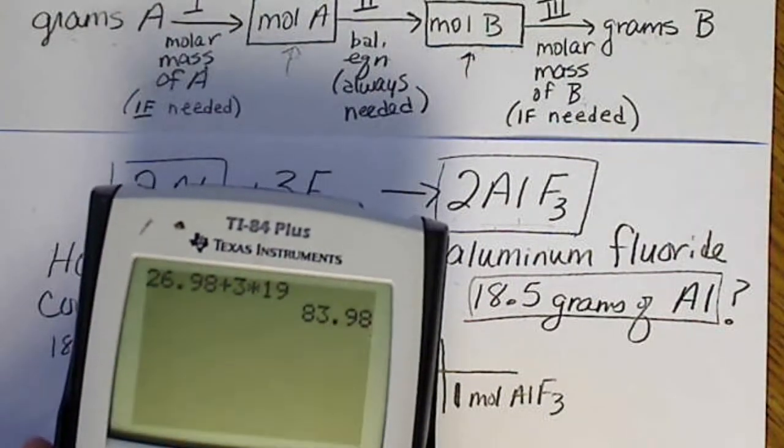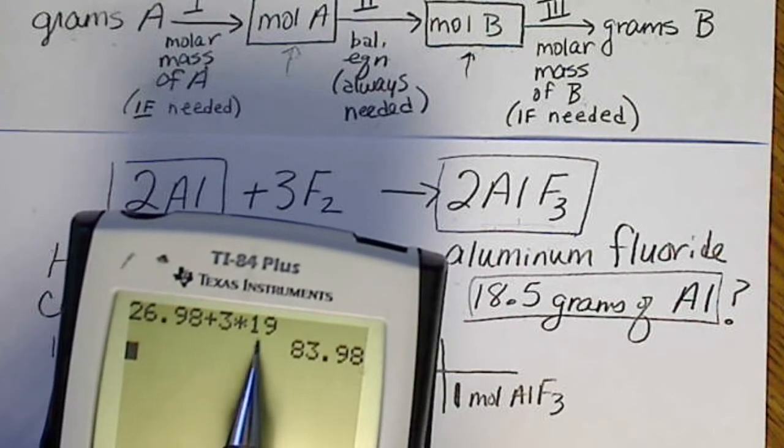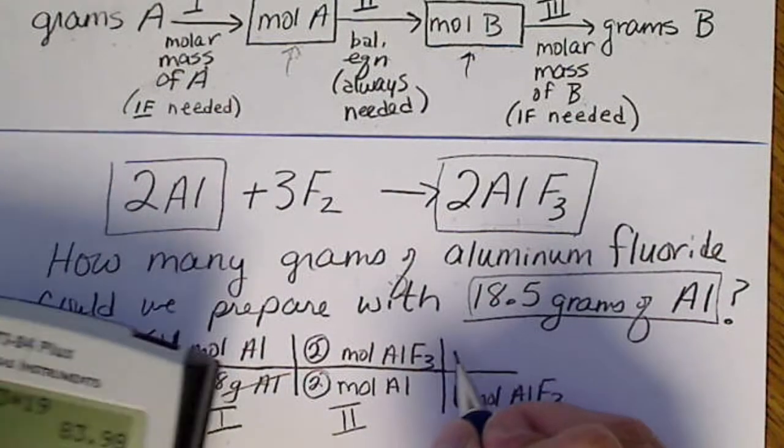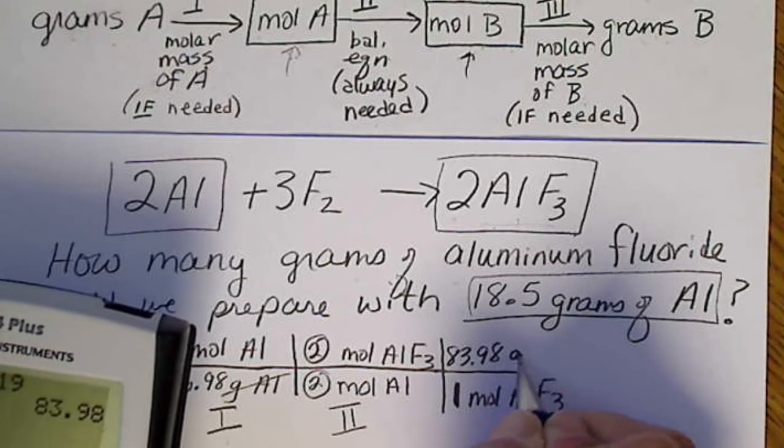So when we do that calculation, that comes off the periodic table for aluminum. There's three fluorides. Each fluoride weighs 19. So the number from the calculator always goes with the unit gram.